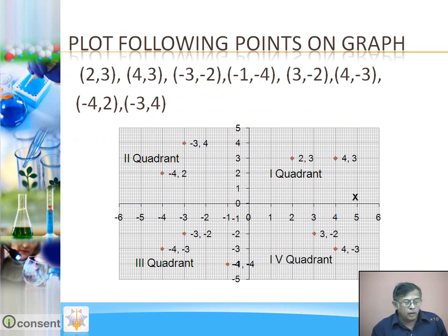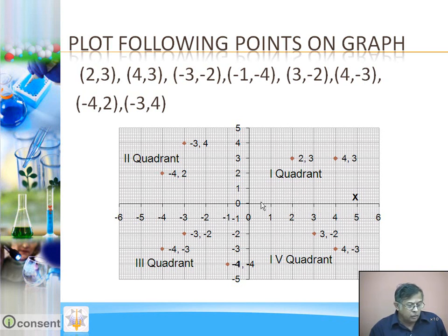Now these points are given — plot the following points on the graph. The first point is (2, 3). The x-coordinate is 2, so mark 2 on the x-axis and draw a vertical line. The y-coordinate is 3, so draw a horizontal line at 3. Their point of intersection is the point (2, 3).